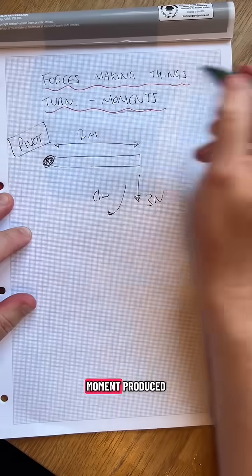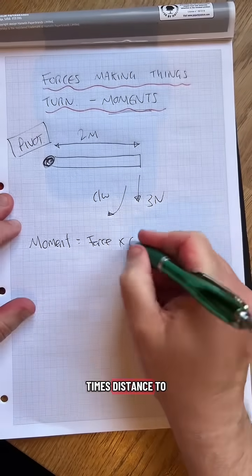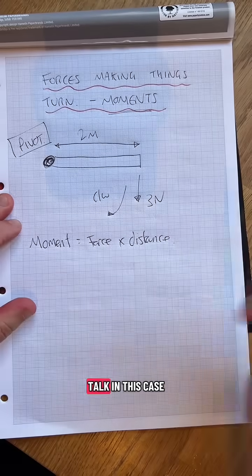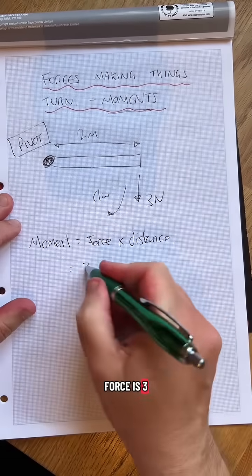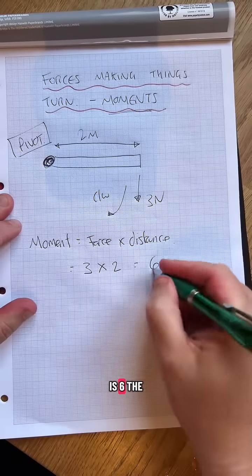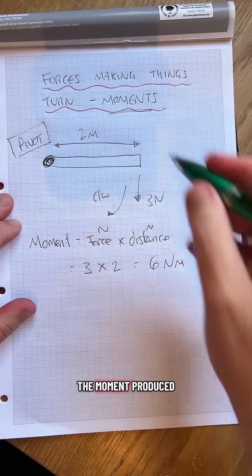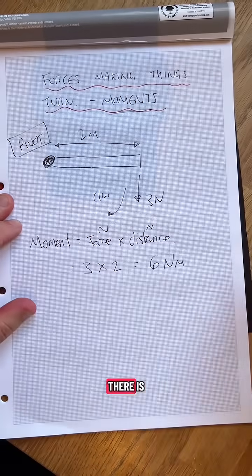So the moment produced, the turning moment, moment is force times distance to the pivot. It's like a torque. In this case, force is three, distance is two. Three times two is six. The unit is newton meters. That's the moment produced on whatever thing there is.